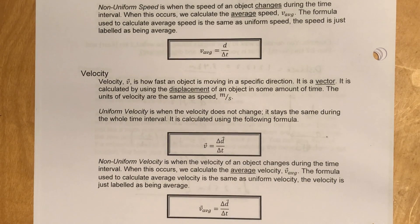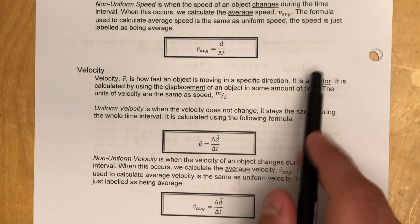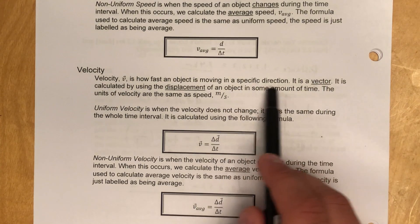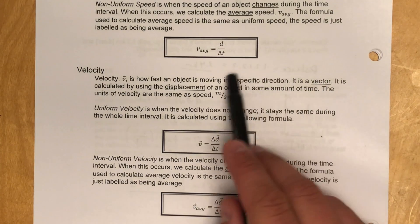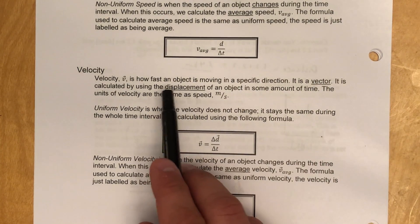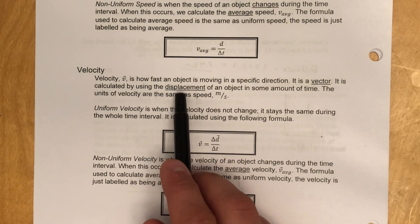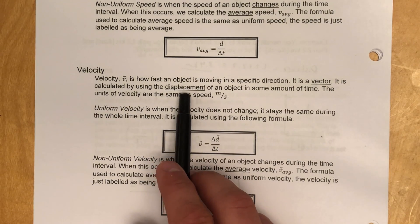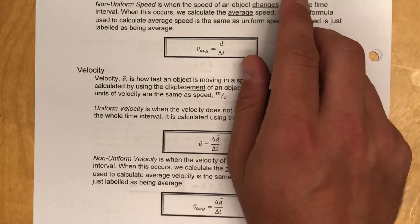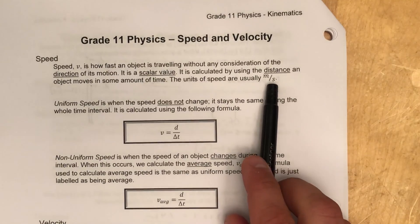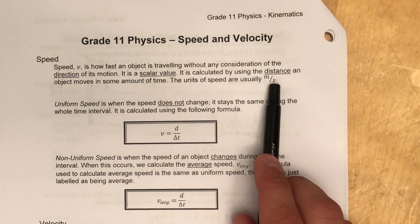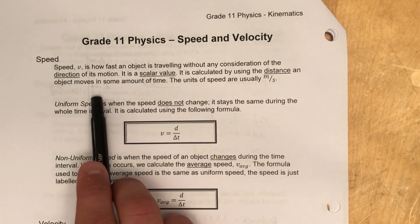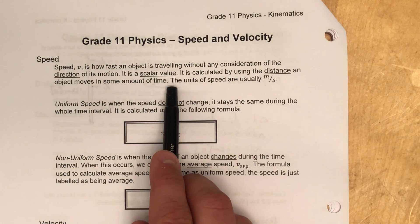Velocity, on the other hand, is a vector — it's how fast an object is moving in a specific direction, which makes it a vector. It is calculated using displacement. Speed is calculated using the distance an object moves in a specific amount of time, while velocity uses displacement.